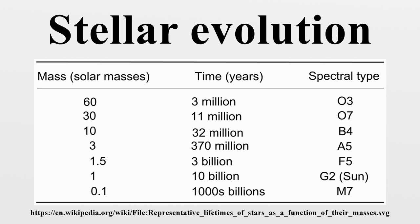Although the universe is not old enough for any of the smallest red dwarfs to have reached the end of their lives, stellar models suggest they will slowly become brighter and hotter before running out of hydrogen fuel and becoming low-mass white dwarfs.